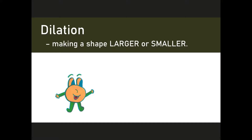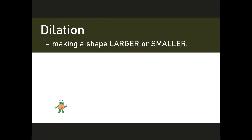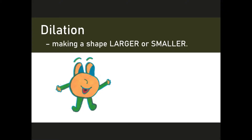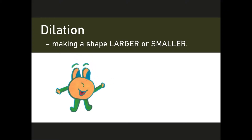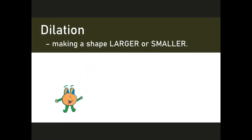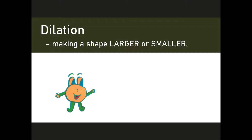Dilation is taking a shape and making it larger or smaller. Let's get smaller first — little tiny Betty Jo — and then really big Betty Jo. That's all it is: making a shape larger or smaller. You might know about dilation if you ever get your eyes checked and they put those little drops in and they make the pupil of your eyes get bigger. That's dilation.